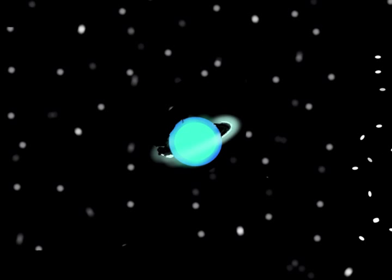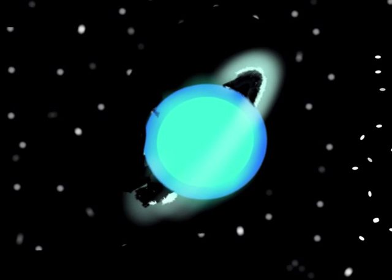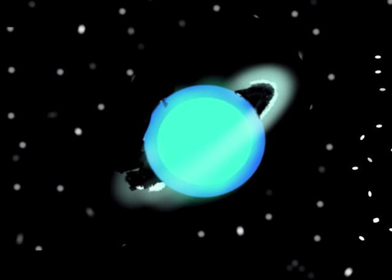Uranus is the farthest planet you can see without a telescope. It is also very cold. It is so cold the methane in its atmosphere has turned to liquid.